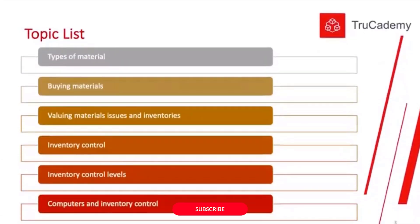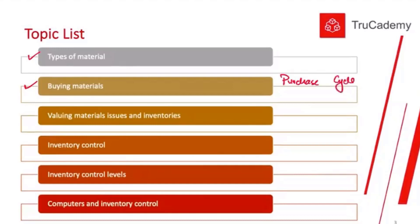The topic list for Chapter 7 includes: first, types of material — already explained; then buying material, the purchase cycle which we studied in MA1 and will review here; then how to value material — whenever we issue materials, how to do the costing. There are three methods for inventory valuation: LIFO, FIFO, and AVCO.